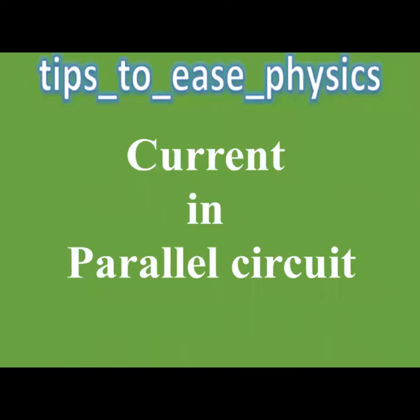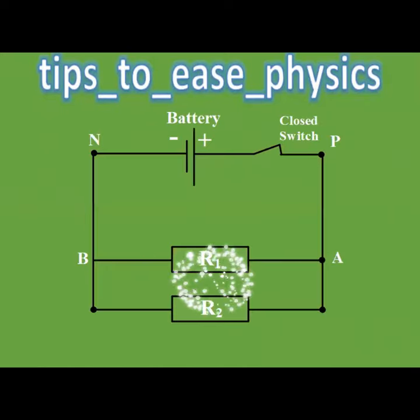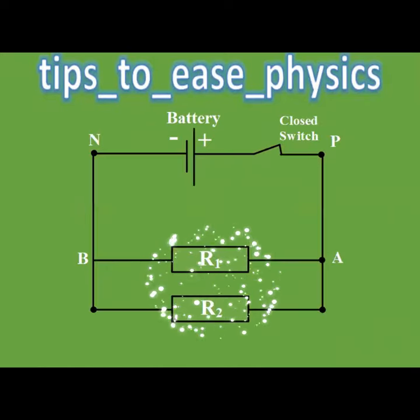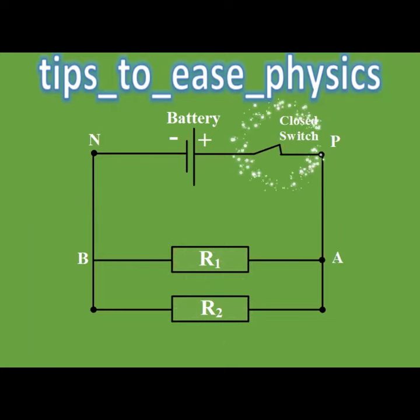How to deal with current in parallel circuits. If we have two resistors that are connected in parallel, after closing the switch, a current will come out from the positive terminal of the battery.